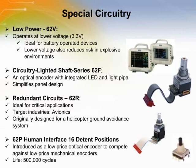The 62P was introduced as a low-cost optical encoder to compete against printed circuit board mounted mechanical encoders. It has the advantage of high life of 500,000 cycles and it does not require extra debounce circuitry.